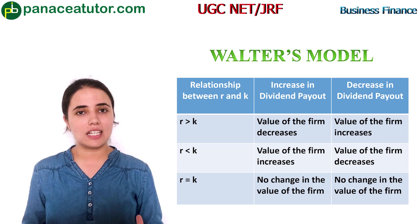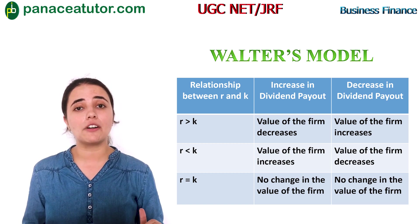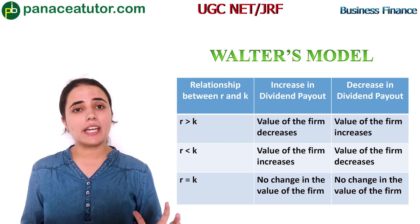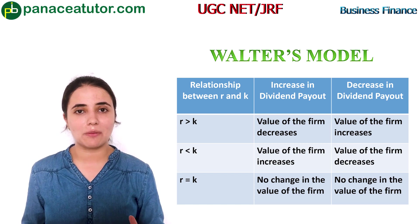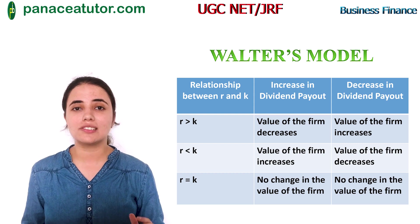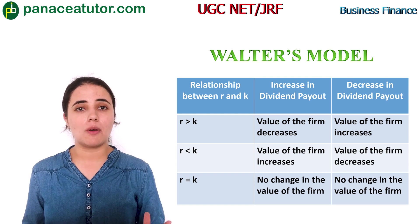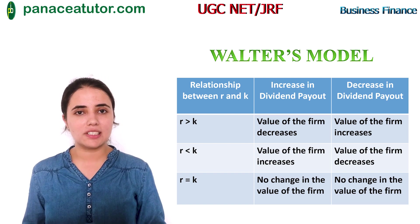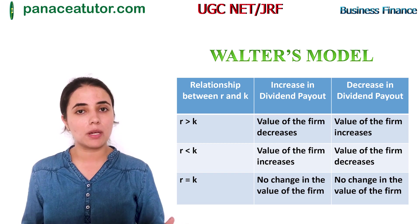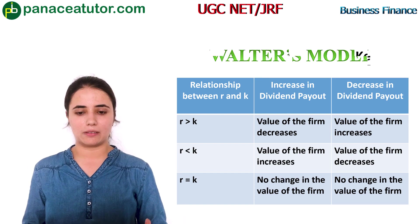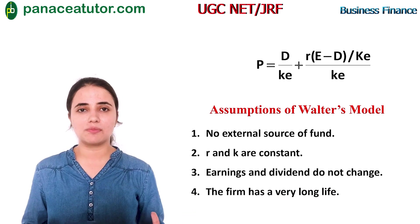In case of declining firms where R is less than K, it is advisable that the dividend payout ratio should be 100%, so that investors get attracted and the market value and market price of the shares can be increased. In case of normal firms, every dividend payout ratio is optimum — whether the company declares 0%, 10%, 20% or 100% dividend — because R is equal to K. The formula for the Walter model is very important; you can see it on your screen and it has been asked many times in UGC.